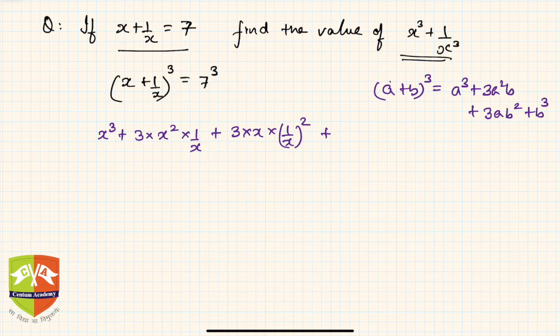And the last term will be simply 1 upon x whole cube, and this is 7 cube. 7 cube is 343. Now, if you see what we can do is let us first club together what do we desire. So we want x cube plus 1 by x cube clubbed together.